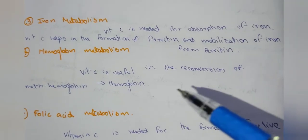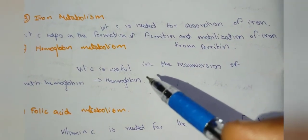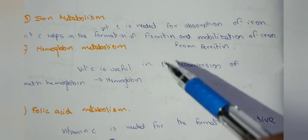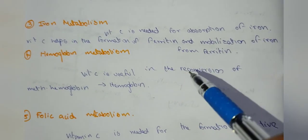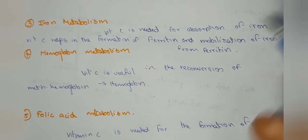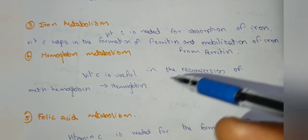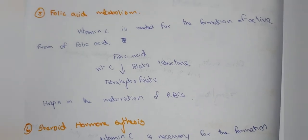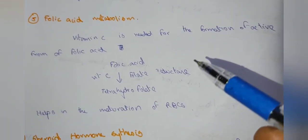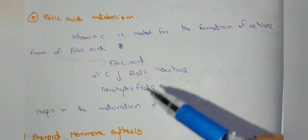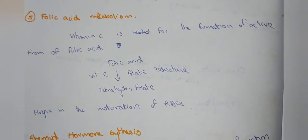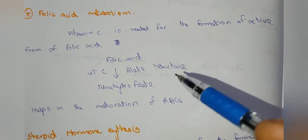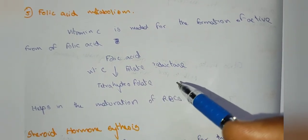In hemoglobin metabolism, Vitamin C is useful in the re-conversion of methemoglobin back to hemoglobin. In folic acid metabolism, Vitamin C is needed for the formation of the active form of folic acid, working alongside folate reductase.